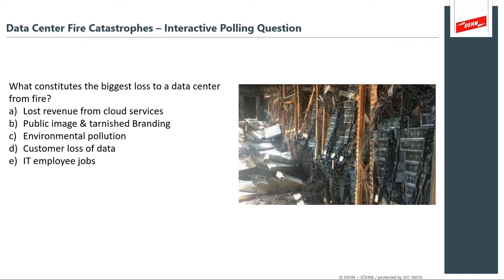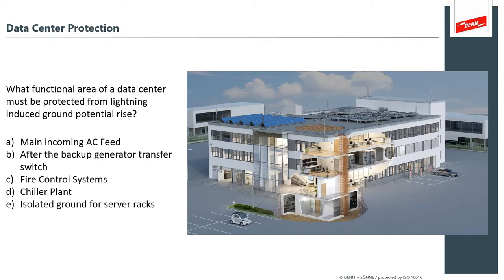The next question: what is the functional area that must be protected from lightning-induced ground potential rise? If the side of the building gets struck by lightning, the lightning currents travel into the earth and induce a large ground swell into the soils and into the structure. Is it the main incoming feed, the backup generator transfer switch, fire control systems, chiller plants, or the isolated grounding systems for the server racks?